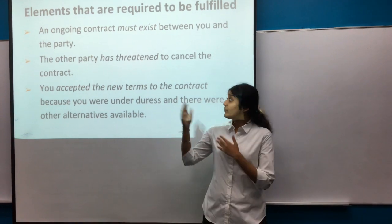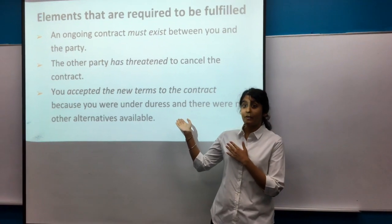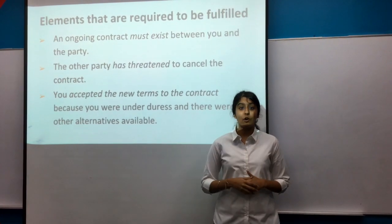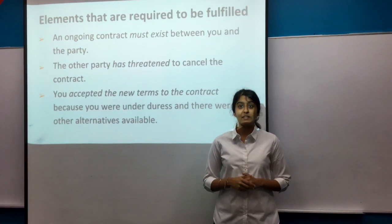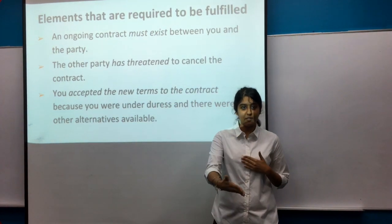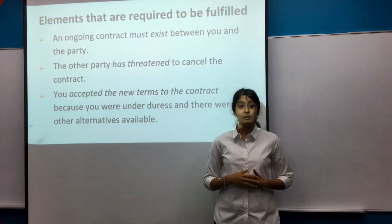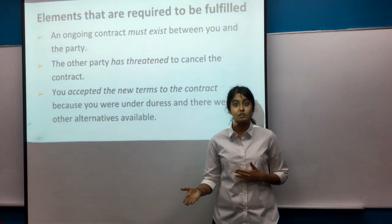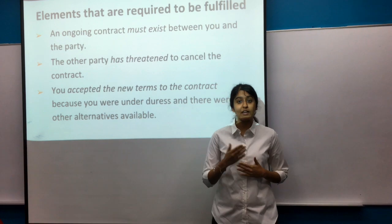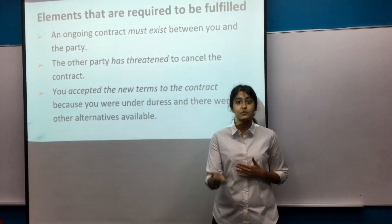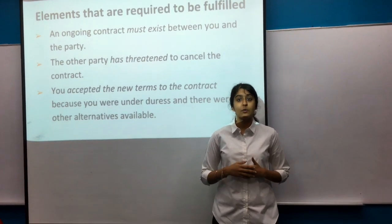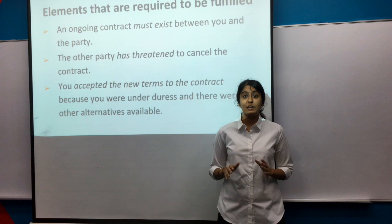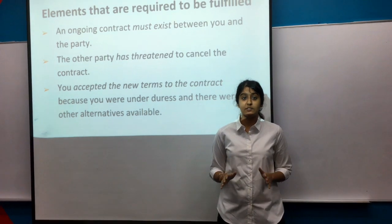The elements required to establish economic duress include: an ongoing contract must exist between the parties; the other party has threatened to cancel the contract; and the victim accepted the new terms because they were under duress and there were no other available alternatives.